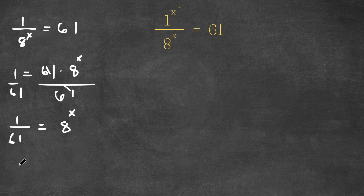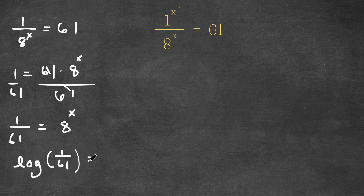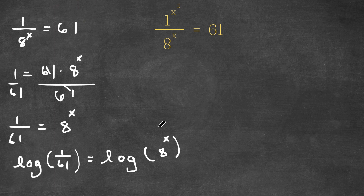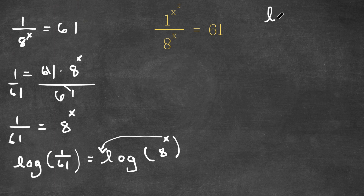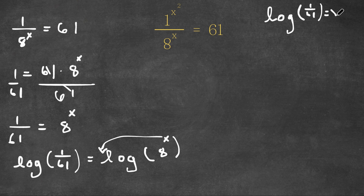Now what I'm going to do is take the log of both sides. So we have log of 1 over 61 is equal to log of 8 to the power of x. The power property of logarithms states that if we have log of a to the power of x, we can move the exponent to the front of the log. So this gives us log 1 over 61 is equal to x times log 8.